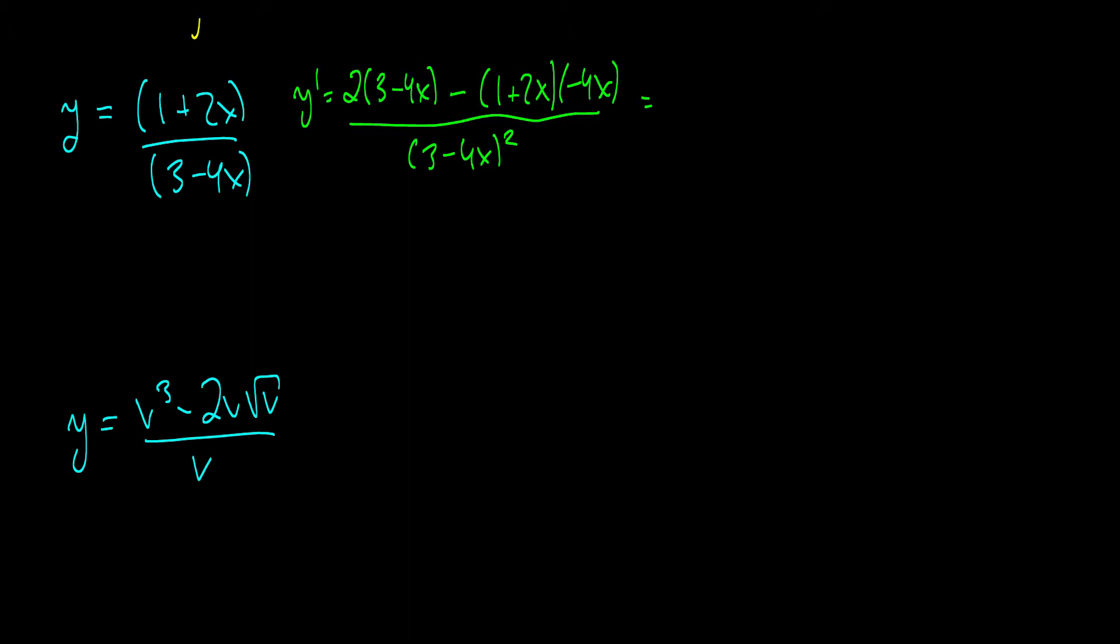So that's 6 minus 8x, plus 4 plus 8x, all divided by 3 plus 4x, all squared. And we can do some canceling here. So the minus 8x will cancel, and this will become 10 over 3 plus 4x, all squared. So there's your answer. I would say that's a fairly simple question.